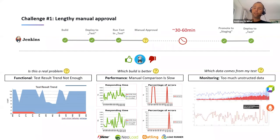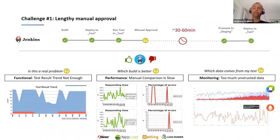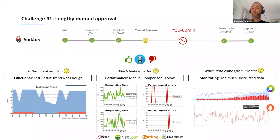The next maturity level we see is adding monitoring data — tools like Prometheus, Dynatrace, New Relic, Datadog, or AppDynamics. The challenge people often tell us is: now we have even more data but we don't know what data to look at, and some tools don't tell you which particular test or build that data comes from. So yes, more data is great, but it still prolongs the build approval process.